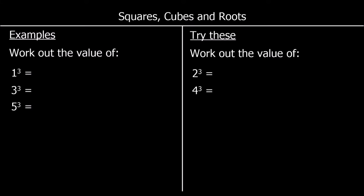When we're asked to cube a number, that means multiply a number by itself and then multiply it by itself again. So 1 cubed — written as a little 3 — means 1 times 1 times 1. 1 times 1 is 1, and then 1 times 1 is 1 again, so 1 cubed is 1.